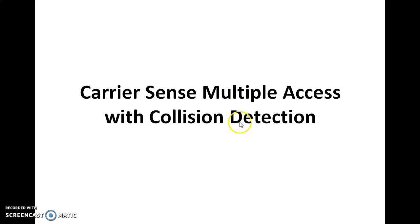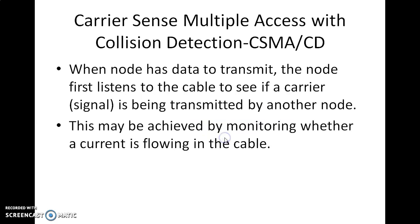In this video we will be seeing about Carrier Sense Multiple Access with Collision Detection. When a node has data to transmit, the node first listens to the cable to see if a carrier — that is, a signal — is being transmitted by another node.